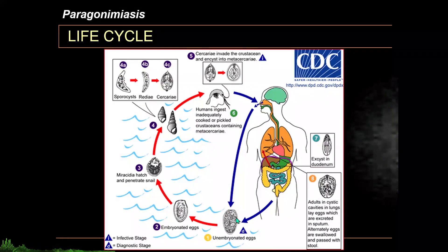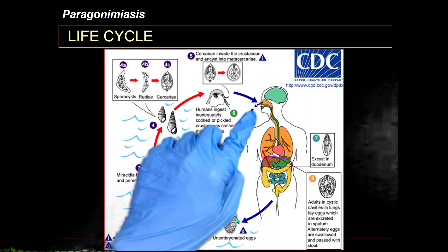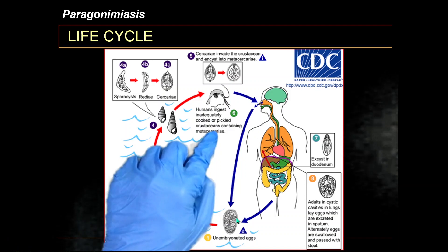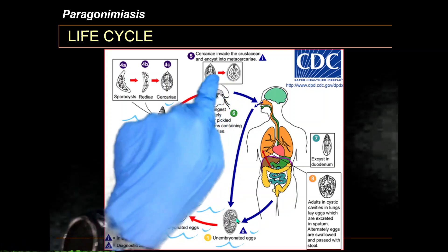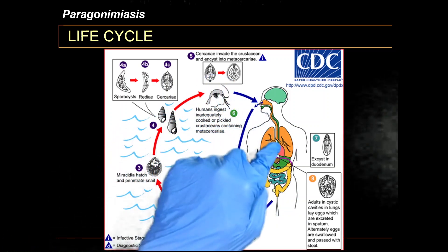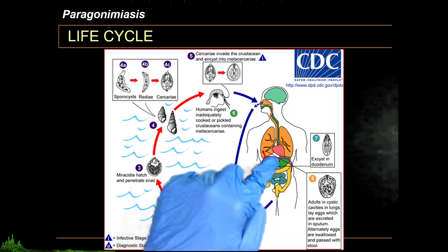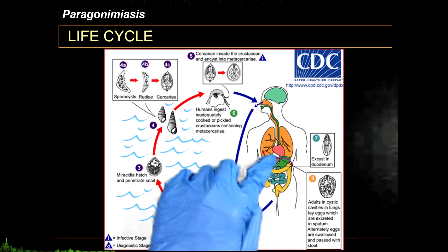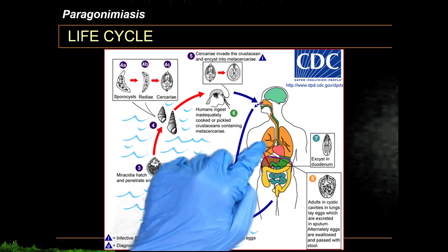The life cycle of Paragonimus starts when humans ingest the infective stage, the Metacercaria, inside freshwater crabs or prawns. The Metacercaria travels down the gastrointestinal tract where the larva exits inside the intestines, and the larva will try to reach the lungs through the peritoneal cavity and the diaphragm.